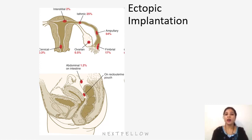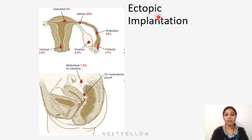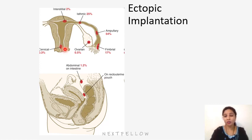Implantation may also occur outside the uterus, such as in the recto-uterine pouch, which is an ectopic implantation. Abdominal implantation can occur somewhere in the abdominal cavity. Ovarian implantation occurs in the ovary. Apart from the upper segment of the uterus, implantation can occur in the cervical region, which is called placenta previa, where it covers the internal os completely or partially. Implantation can also occur in the fallopian tube, including isthmus, ampullary, and fimbrial implantation.